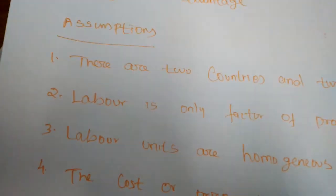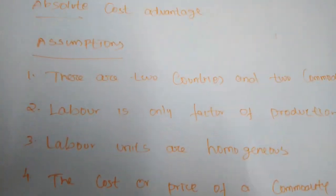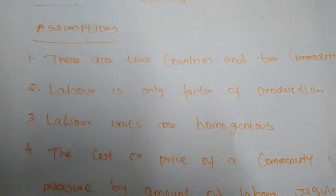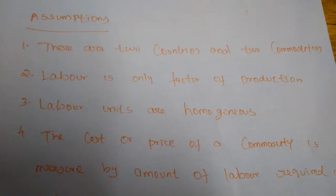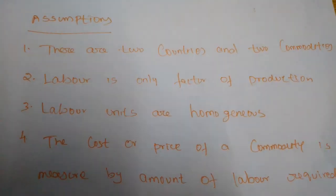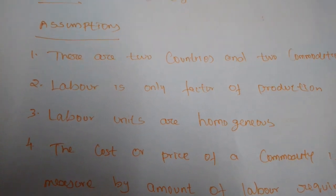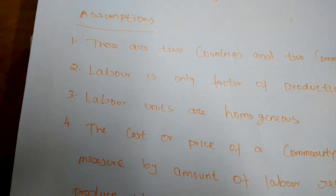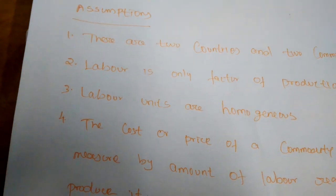According to Adam Smith, the basis of international trade is absolute cost advantage — international trade happens on the basis of absolute cost advantages only. Absolute cost advantage means if any nation has the possibility to produce any commodity at low cost and produce more, it leads to international trade. Trade between two countries would be mutually beneficial when one country produces a commodity at an absolute cost advantage over the other.